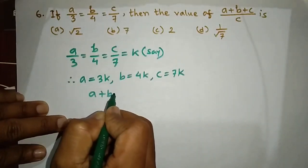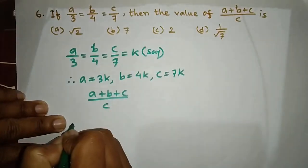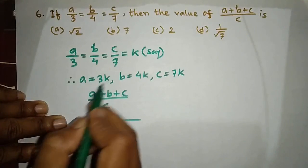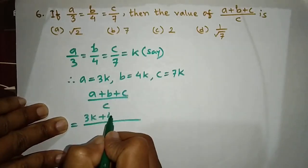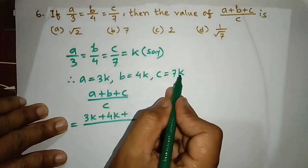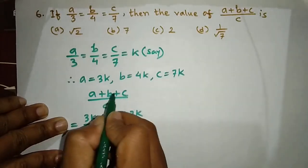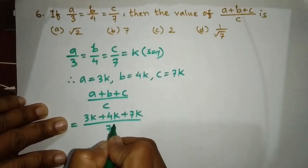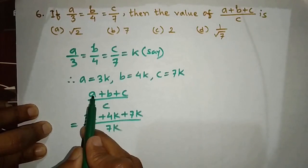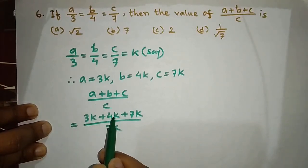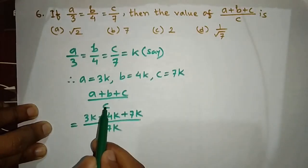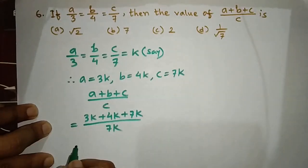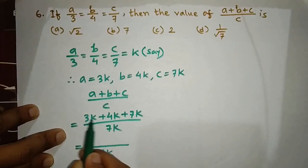A plus B plus C divided by C. Let A equals 3k, B equals 4k, and C equals 7k. So A is 3, B is 4, C is 7. Adding them: 3k plus 4k plus 7k equals 14k. Dividing by C which is 7k gives 14k divided by 7k equals 2.